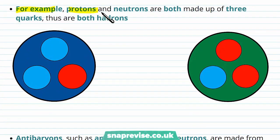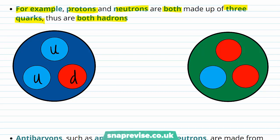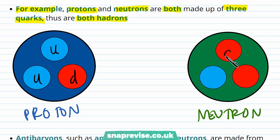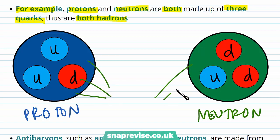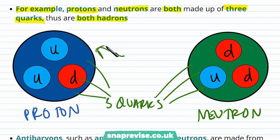Protons and neutrons are both made up of three quarks, and thus are both baryons. A proton is made up of two up quarks and a down quark, and a neutron is made up of two down quarks and one up quark. So we've got three quarks for each of these particles, which is why both are classified as baryons.